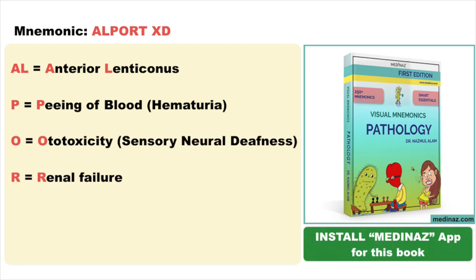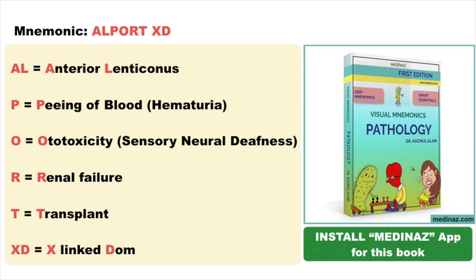R is for renal failure. T is for transplant — Alport syndrome patients sometimes need a kidney transplant, so T helps you remember transplant. And lastly, XD will help you to remember that it is an X-linked dominant disease.